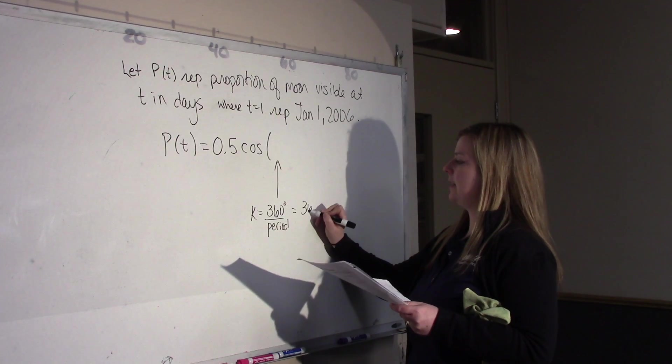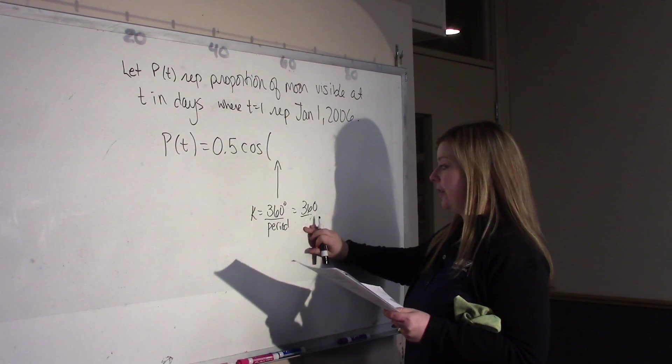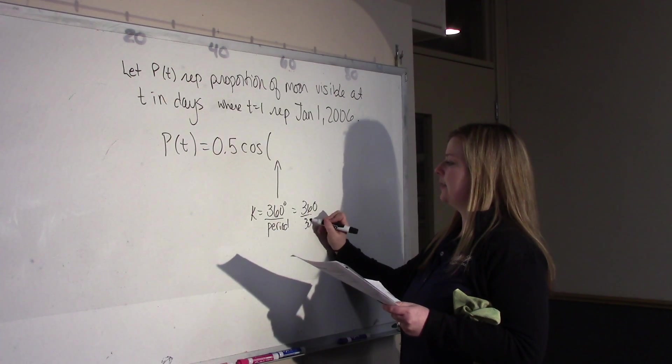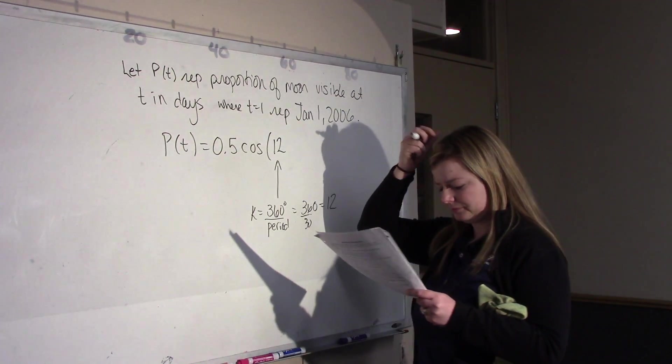So, it's 360 divided by 12. Sorry, divided by 30. It's 30 days. So, my K value is 12. So, 12.